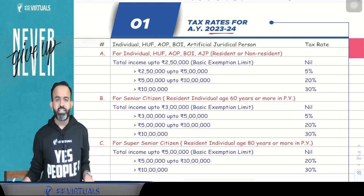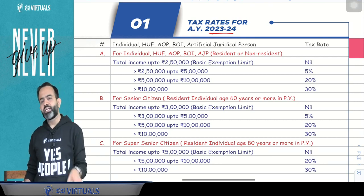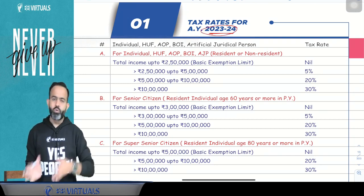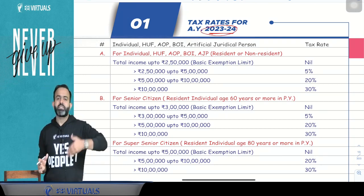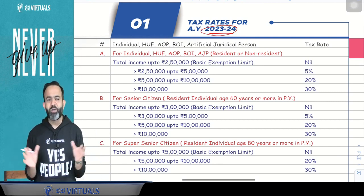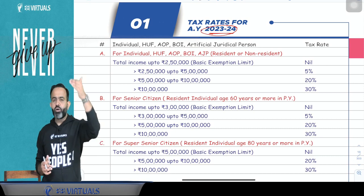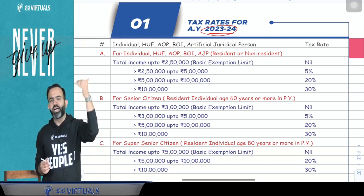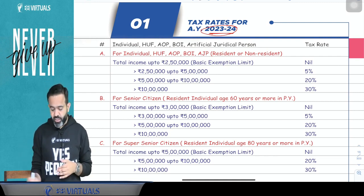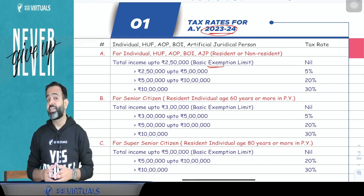That is tax rate for Assessment Year 23-24. For your examination, your previous year is 22-23. Whatever income earned in the previous year 22-23, you are going to file the return in Assessment Year 23-24. First, we are going to start with the general tax rate — the normal tax rate. In case of Individual, HUF, AOP, BOI, Artificial Juridical Person, there is a slab rate: up to ₹2,50,000 is basic exemption, ₹2,50,000 to ₹5,00,000 at 5%, ₹5,00,000 to ₹10,00,000 at 20%, more than ₹10,00,000 at 30%.